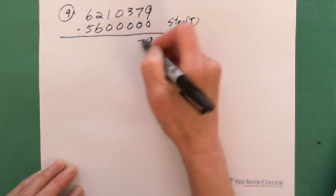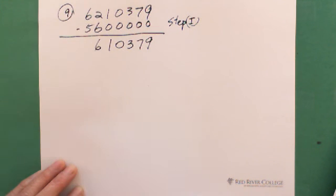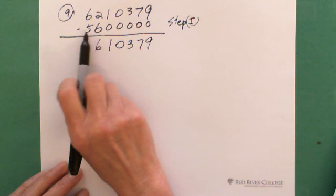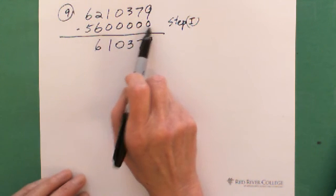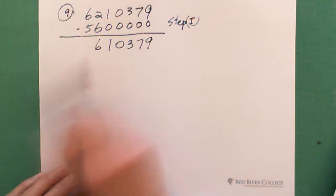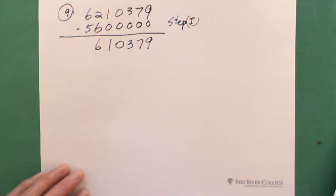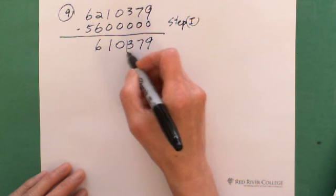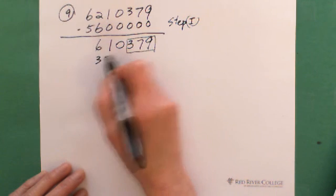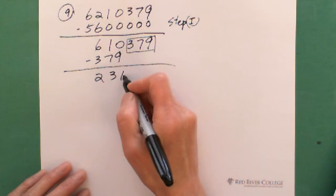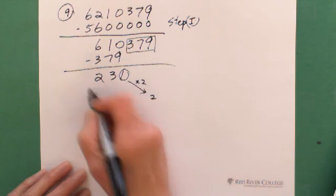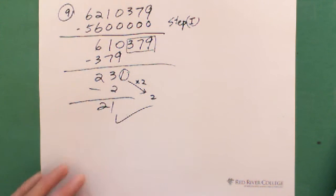After Step 1, you get 610,379. Now apply the second method in Step 2: the last 3 digits form 379, and the remaining digits form 610. Subtract: 610 minus 379 equals 231. This is a 3-digit number. In Step 3, apply the first method: double the one's digit of 231, which is 1, giving you 2. Subtract 2 from 23 to get 21. Since 21 is a multiple of 7, the original 7-digit number 6,210,379 is divisible by 7.